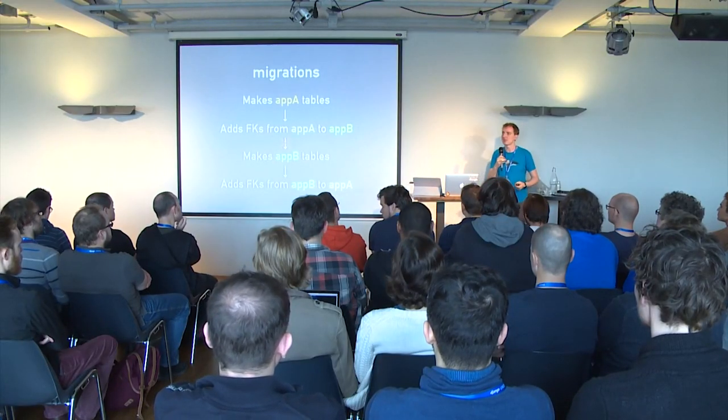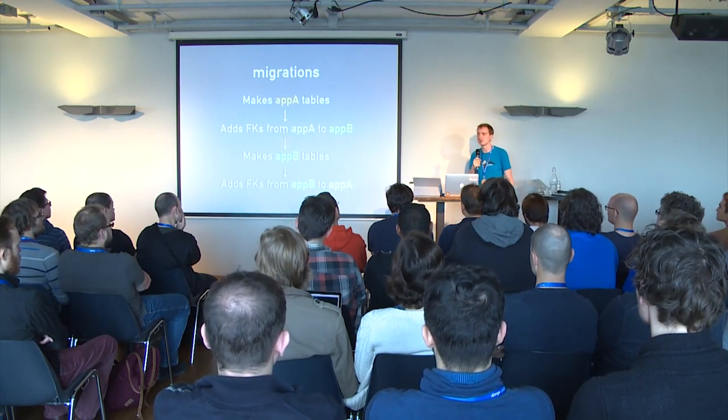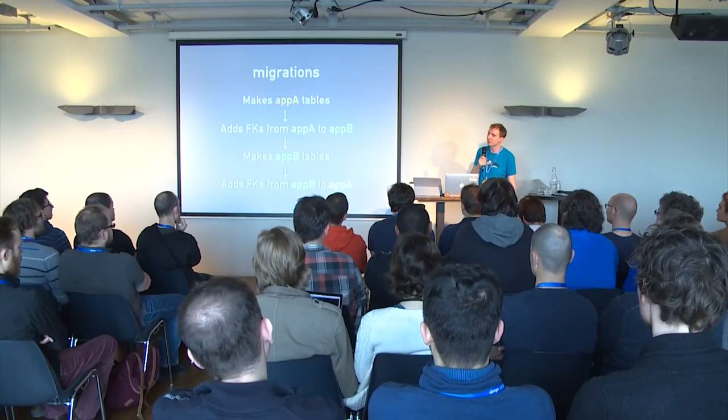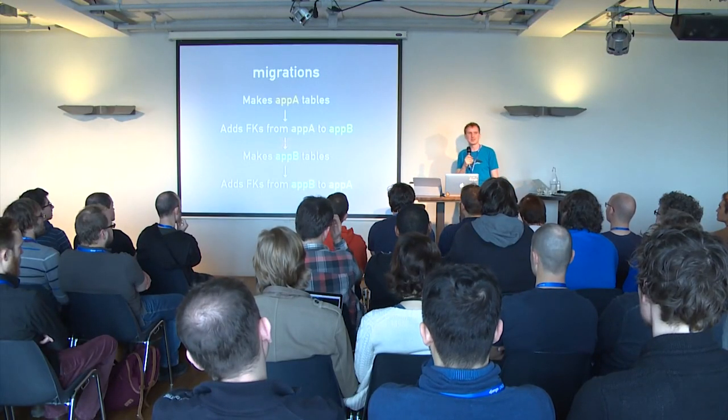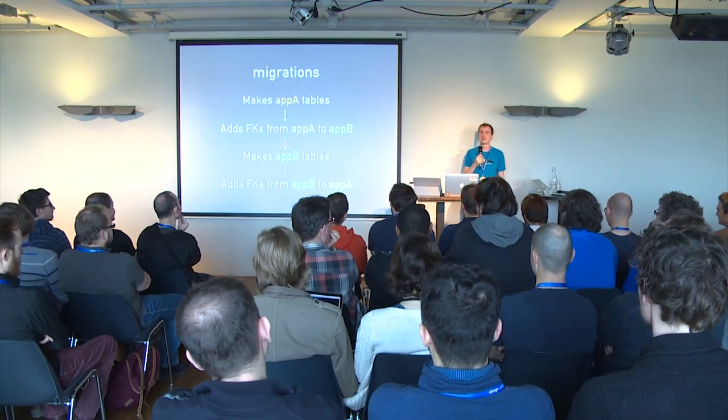A big part of the push to get 1.7 out was finding more and more corner cases. It turns out that tiny, random Django features actually have dependencies when applied, so we had to go through and fix everything. What you're seeing here today was not in the Django 1.7 alpha. The entire operations and autodetector dependency system was added during beta 2, because initially it was very dumb and as more bug reports came in, I realized this needs actual computer science — we can't just do things in order.